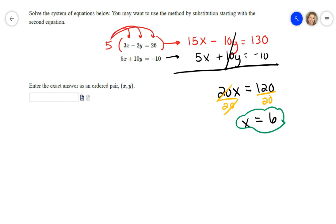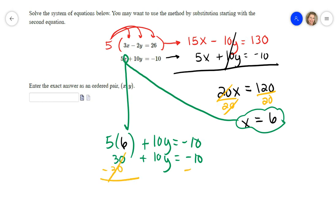...and plug it back into this equation where the x is. So that's going to be 5 times 6 plus 10y equals negative 10. 5 times 6 is 30. I cannot add that to 10y because they are not like terms, so I'm going to subtract 30 from both sides.